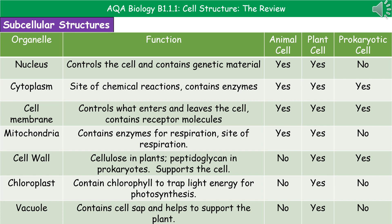I've given you a table with the name of each subcellular structure on the left, its function in the middle, and whether it's present in plant, animal, and prokaryotic cells on the right. The first is the nucleus, which has the function of controlling the cell because it contains the genetic material. These are found in eukaryotic cells — animal and plant cells — but not in prokaryotic cells. The second subcellular structure is the cytoplasm, where the chemical reactions take place because that's where we find the enzymes for those reactions. Cytoplasm is found in all three cell types.